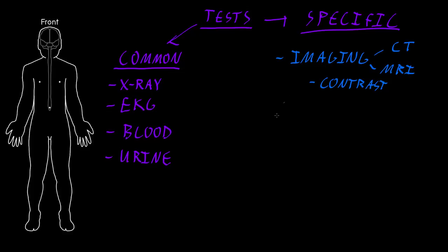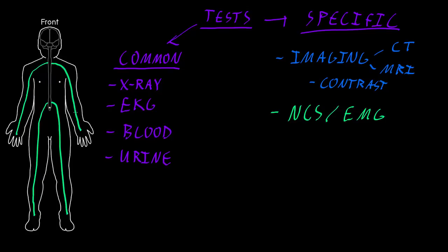The next group of tests that can be very useful are often shortened to NCS slash EMG. This is short for Nerve Conduction Studies and Electromyography. These tests are particularly good at looking at dysfunction in the peripheral nervous system or in skeletal muscle. These are electrical tests that use electricity to look for dysfunction in the peripheral nervous system or skeletal muscle.